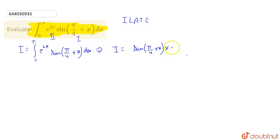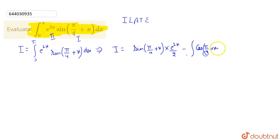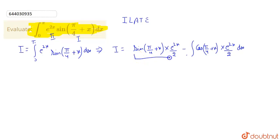Applying integration by parts, we get the first term multiplied by the integration of the second term, that is e^(2x)/2, minus the integral of the derivative of the first term, which is cos(π/4 + x), multiplied by the integration of the second term, e^(2x)/2 dx. We retain this part and apply integration by parts again.